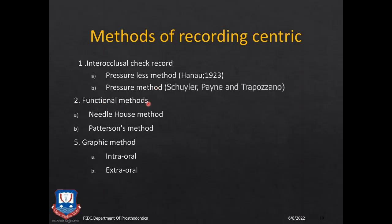The next method of recording centric relationship is the functional method. In this we have the needle method, the House method — also known as the needle and house method — the Patterson method, and Mayer's method.